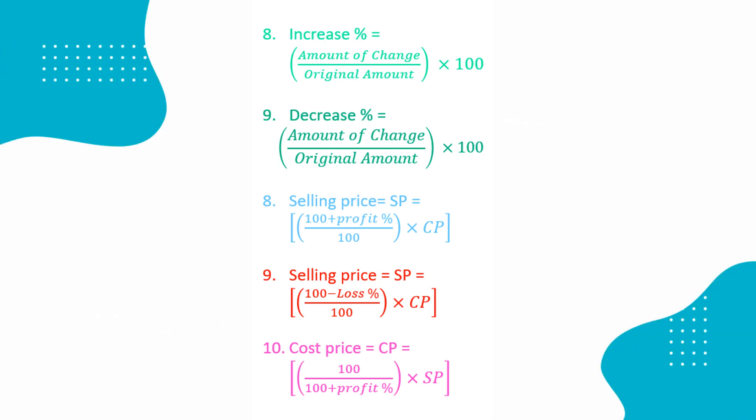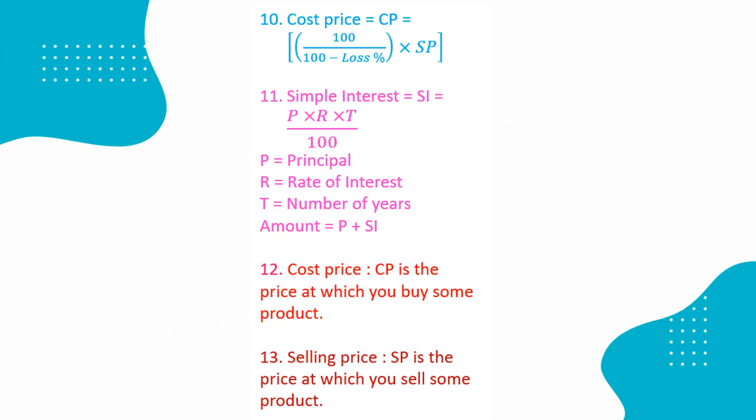Cost price equal to 100 by 100 plus profit percentage into SP. Cost price equal to 100 by 100 minus loss percentage into SP.